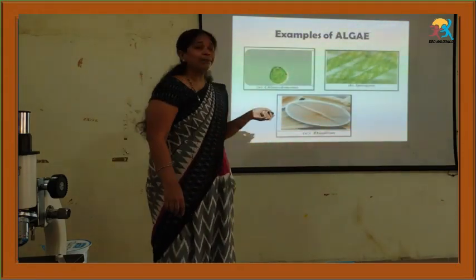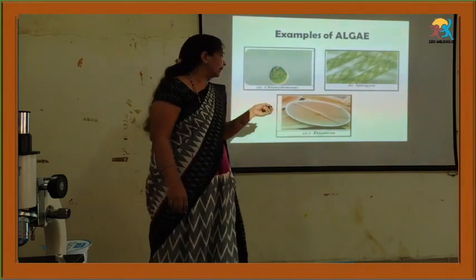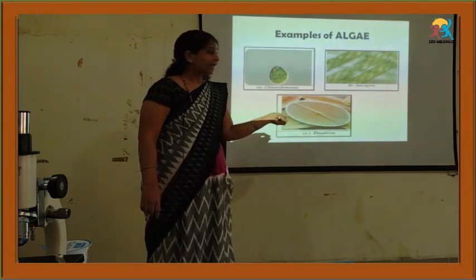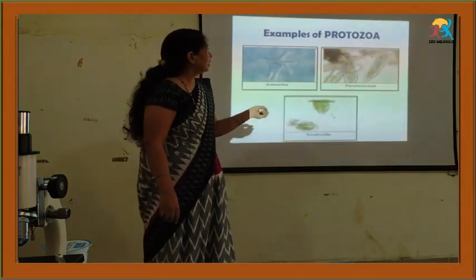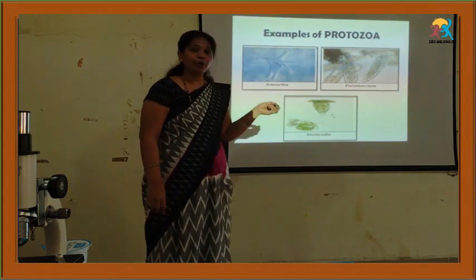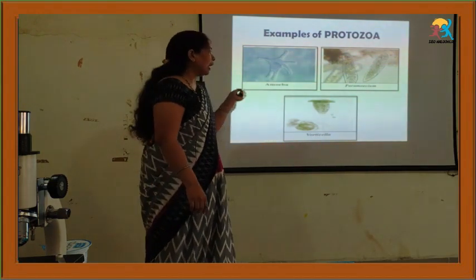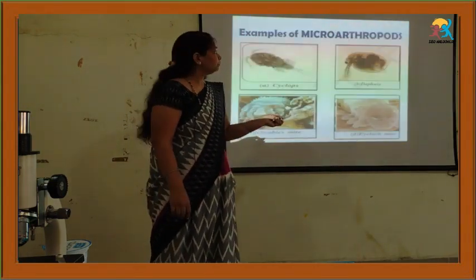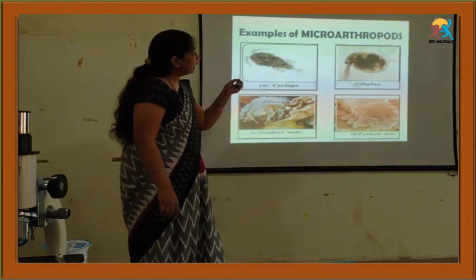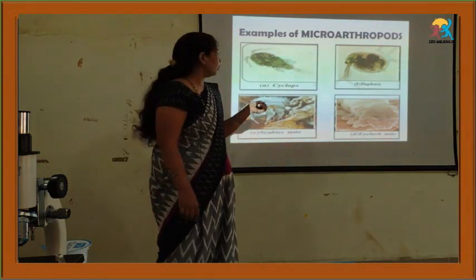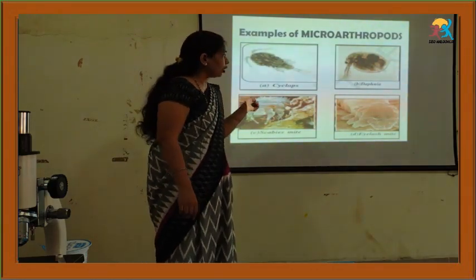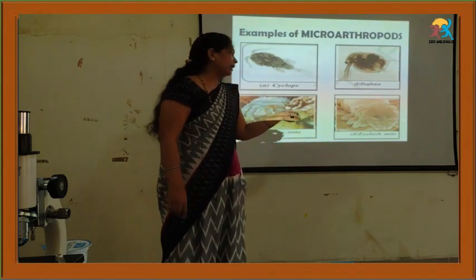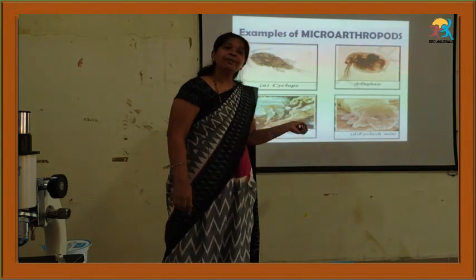Examples of algae include chlamydomonas, spirogyra, and diatom. Examples of protozoa include amoeba, paramecium, and vorticella. Examples of microarthropods include cyclops, daphnia, scabies mite, and eyelash mite.